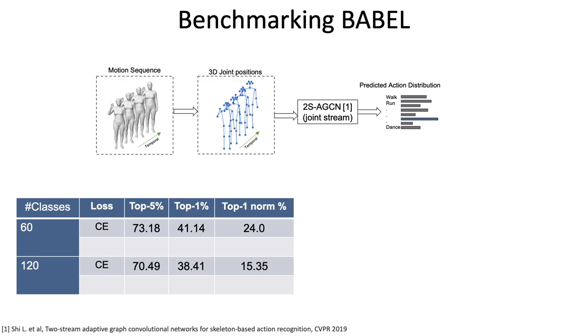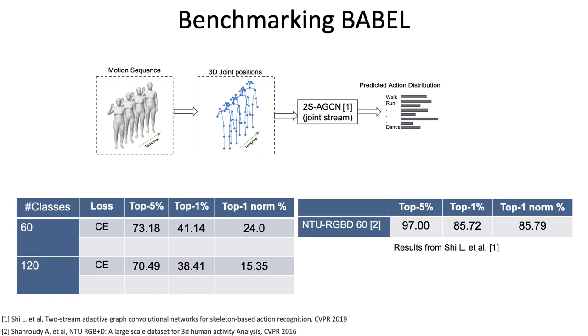We train and evaluate on two versions of the dataset, one with 60 classes and the other with 120 classes. While 2s-AGCN achieves 85% accuracy on NTU-RGBD60, performance on Babel is much lower.